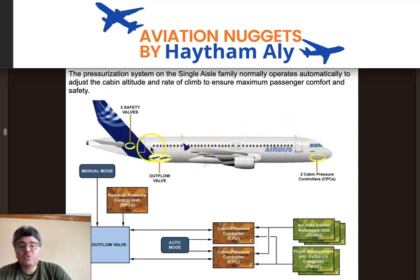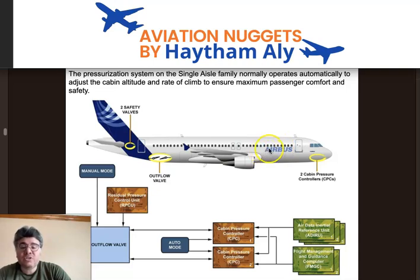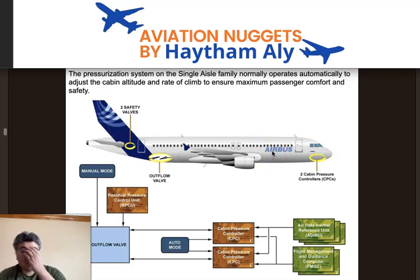Controlling the altitude of the cabin is a major and important function inside the aircraft systems. The pressurization system comes from the pneumatic and air conditioning system. Whenever we talk about the pressurization system, we always speak about aircraft altitude and cabin altitude.